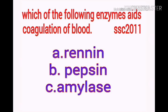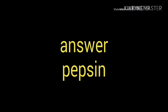Which of the following enzymes aids in the coagulation of blood? Options: a) rennin, b) pepsin, c) amylase. Your answer is pepsin.